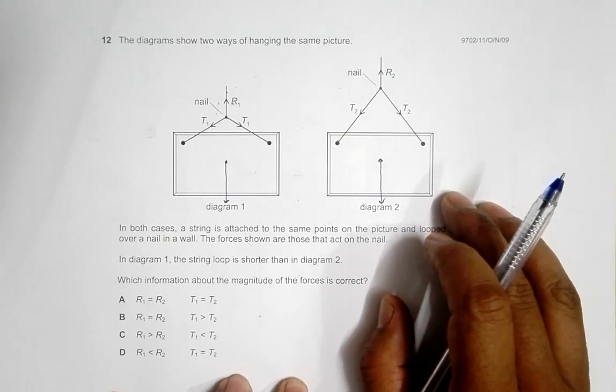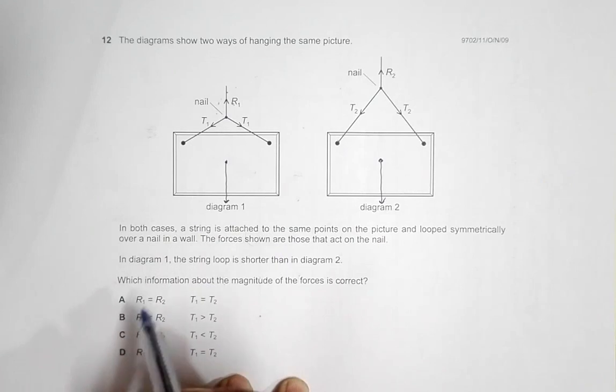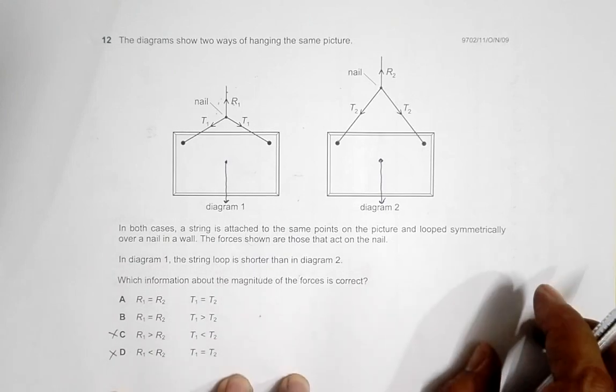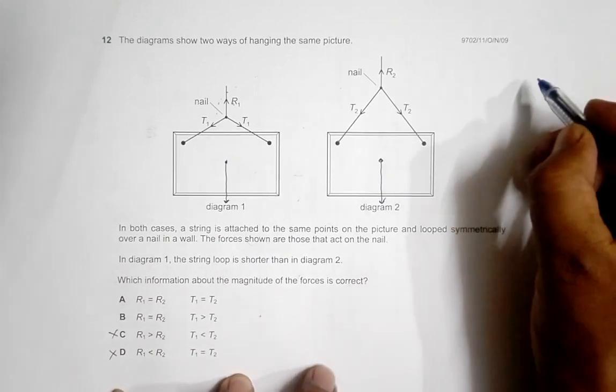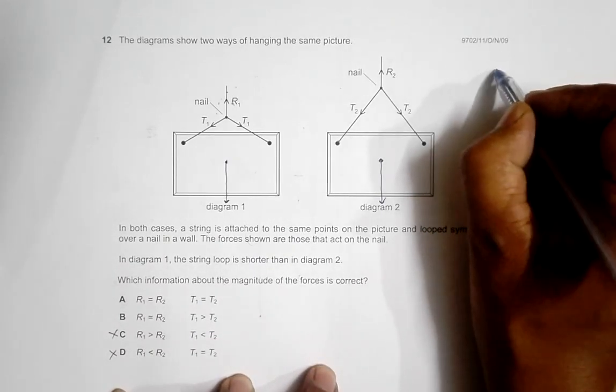If we go through the choices, choice A and B could be correct. C and D cannot be correct.